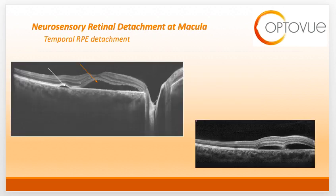The OCT on the left is a nice example of a serous PED alongside a neurosensory detachment. The white arrow is pointing at the serous PED and the orange arrow is pointing at the neurosensory detachment. Note the location of the RPE: in the PED, the RPE is elevated upward, while with the neurosensory detachment, the RPE has stayed in place. On the bottom right, you can see a bilobed serous detachment with exudation in the center.